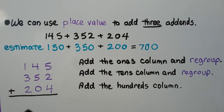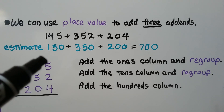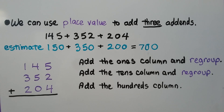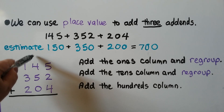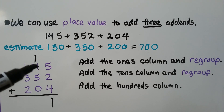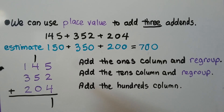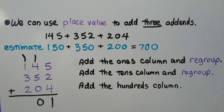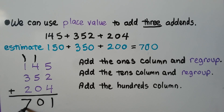We add the ones column: five plus four is nine, plus two more is 11 — that's a ten and one one. Then we add the tens column: five plus one plus four makes five, so we have five plus five which is 10 tens. We regroup the 10 tens as a hundred and put zero in the tens place. Then we add the hundreds: one plus two plus one plus three equals seven. Our actual sum is 701, very close to our estimate of 700.